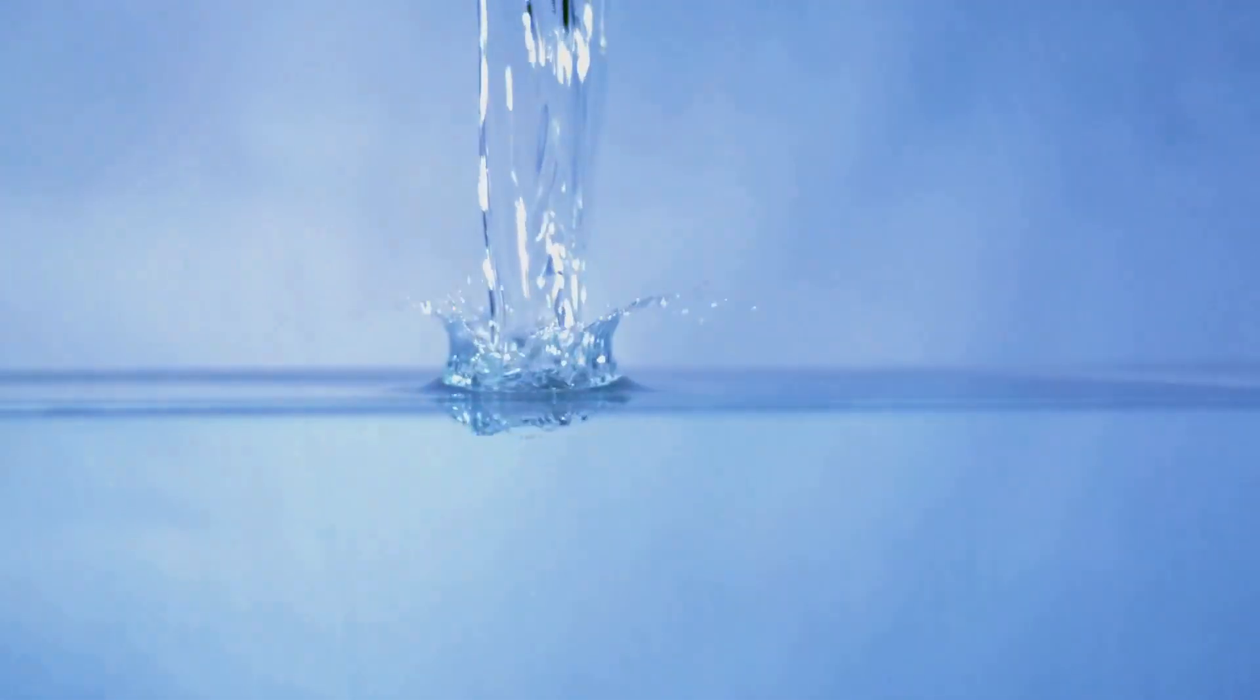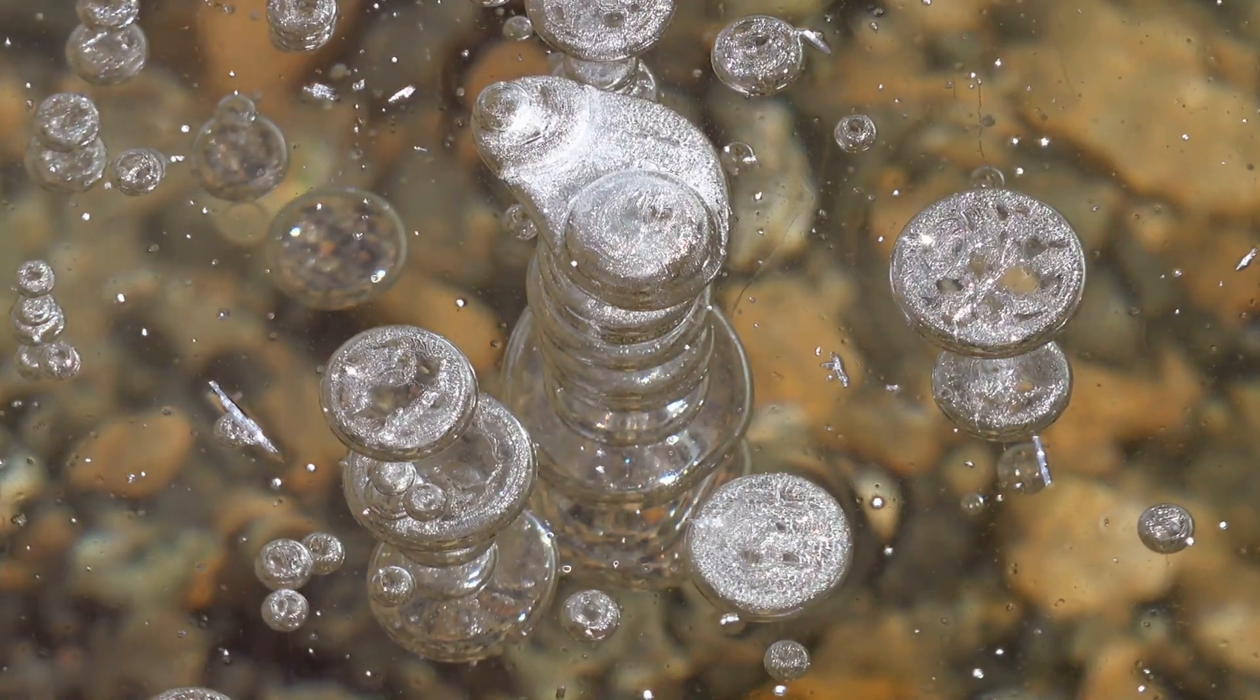The Weber Number is like a special code that helps us understand how fluids behave. It tells us whether the fluid will break apart into droplets or stay together as a single blob.